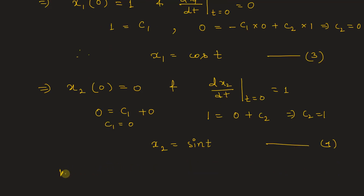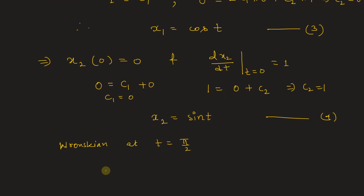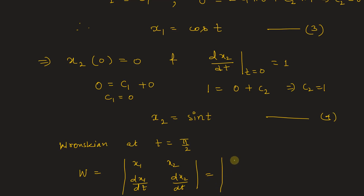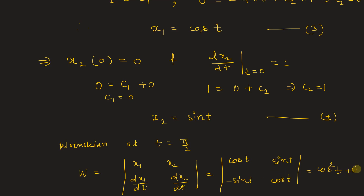So the Wronskian at t = π/2: W = det[x1, x2; dx1/dt, dx2/dt] = det[cos(t), sin(t); -sin(t), cos(t)]. This gives W = cos²(t) - (-sin²(t)) = cos²(t) + sin²(t).